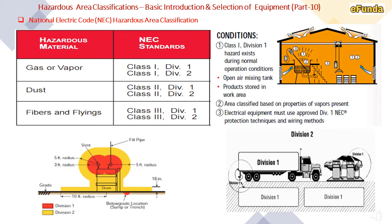NEC hazardous area classification: refer to the table where gas or vapour is Class 1 Division 1 and Class 1 Division 2; dust is Class 2 Division 1 and Class 2 Division 2; fibres and flyings are Class 3 Division 1 and Class 3 Division 2. In the petrol pump example, Division 1 and Division 2 classifications are shown — Division 1 is indicated in red and Division 2 in yellow.